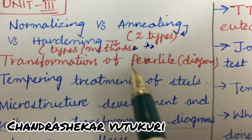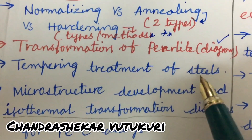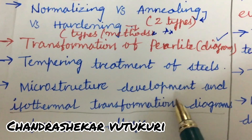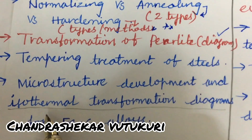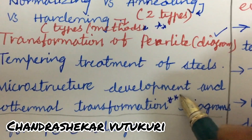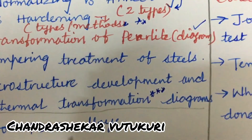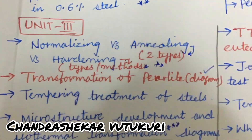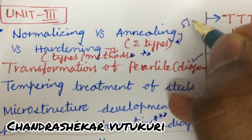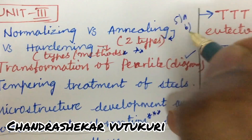Transformation of pearlite along with its diagram, and tempering treatment of steels with microstructure development, and the isothermal transformation diagram is said to be a gunshot question for iron-carbon alloys. From this part you are going to get one question — that is 5A as well as 5B.